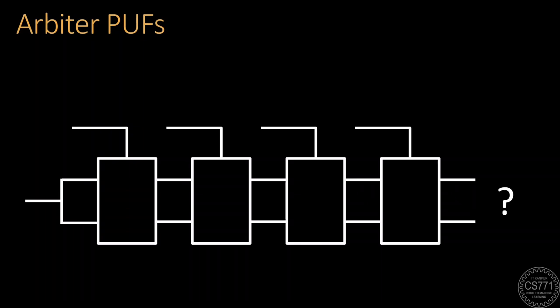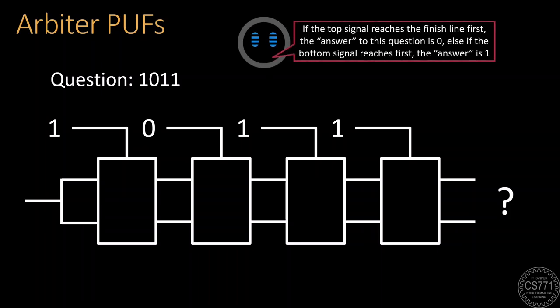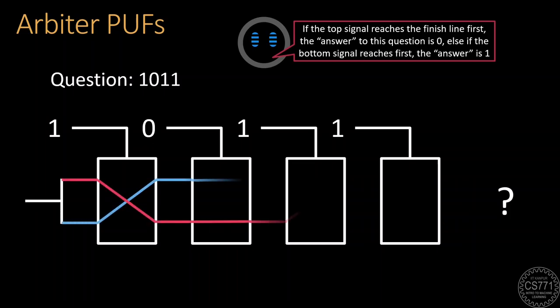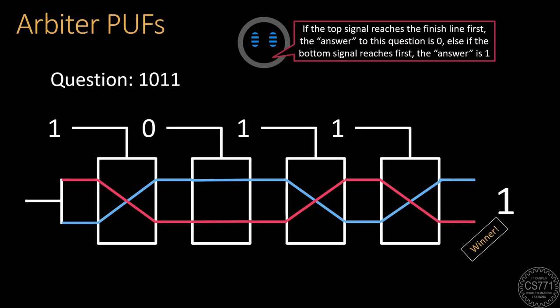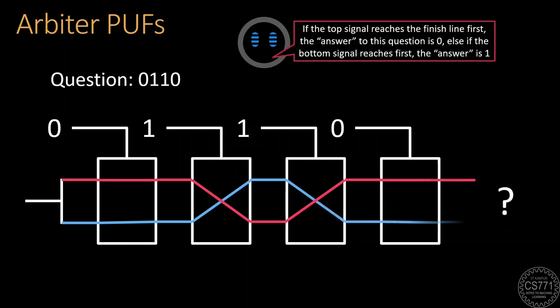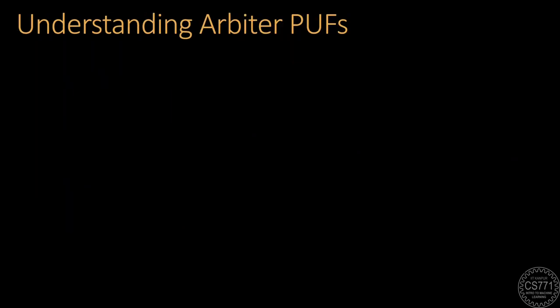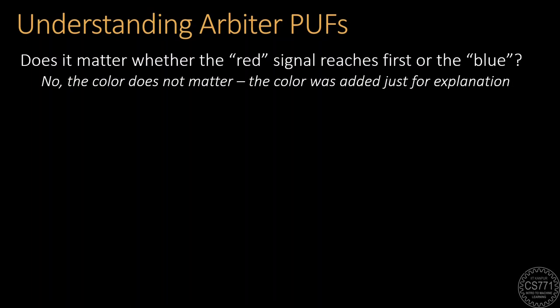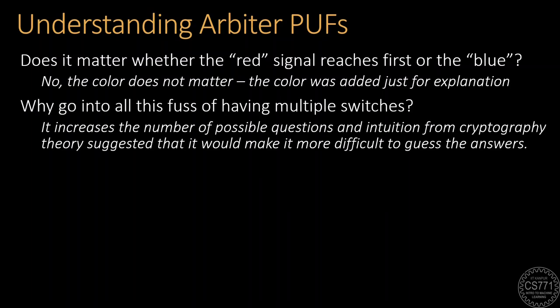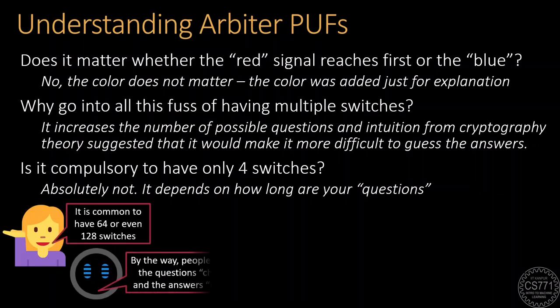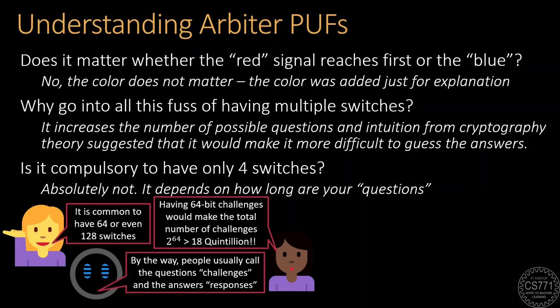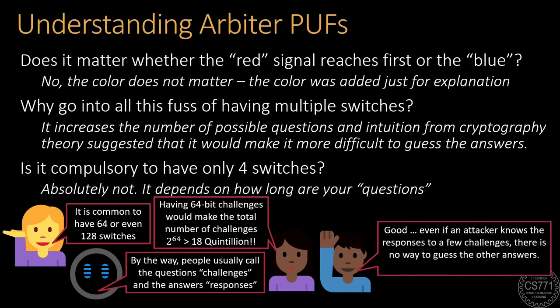When we string together several such switches, we get what is called an arbiter PUF. We send the same signal to both the upper and lower path of the first switch. The select bits of these switches are the question, and the answer is found out by checking whether the top signal or the bottom signal reaches the finish line first. If the bottom signal reaches the finish line first, then the answer is 1; if the top signal reaches the finish line first, then the answer is 0. Having multiple switches increases the number of possible challenges, and traditional wisdom from cryptography tells us that this should make the system more secure. Thus, even if a few responses are stolen, we could always discard those challenges and create new ones, and there would be no way for the attacker to find the responses to the new challenges using the stolen ones. Or so we thought.